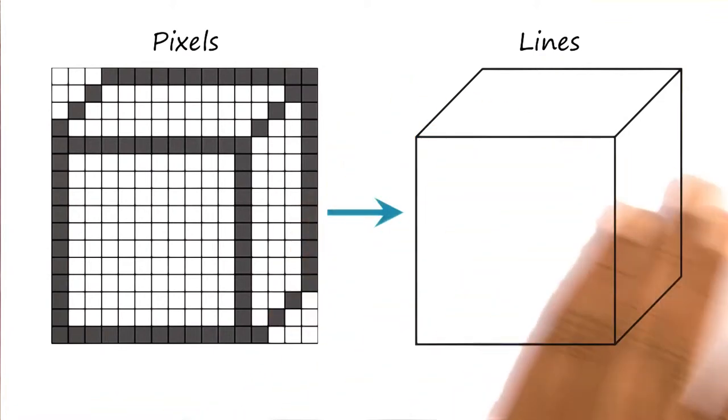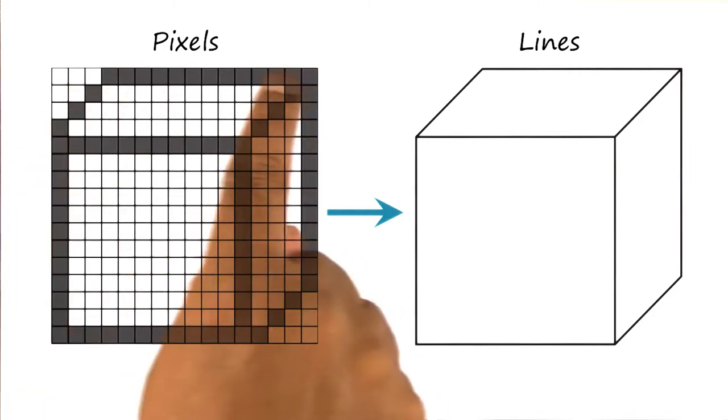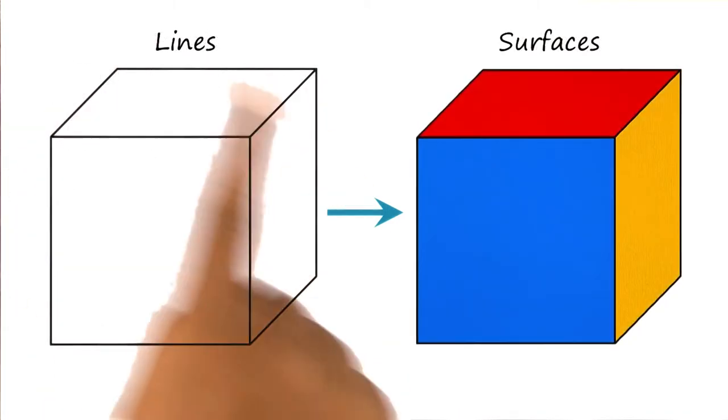At this particular point, no surfaces have been detected. At this particular point, no 3D object has been recognized. Just these pixels have been grouped into lines based on the intensities of light in the different pixels.